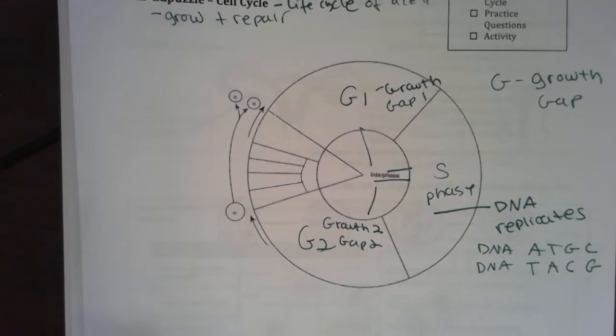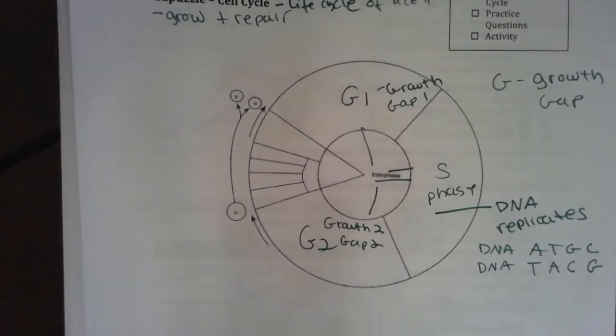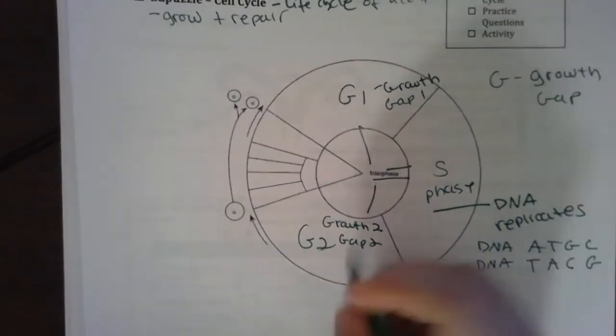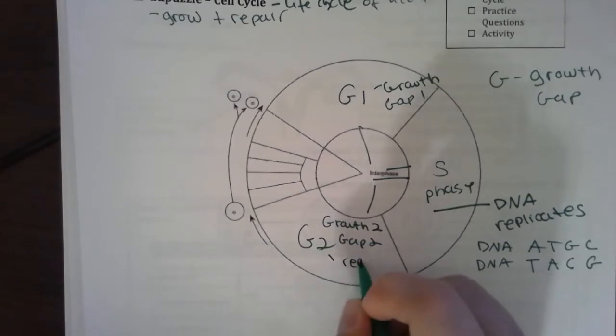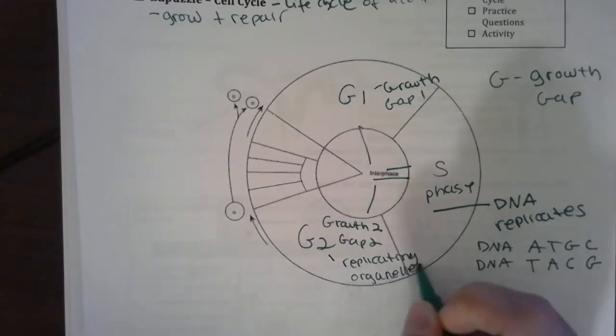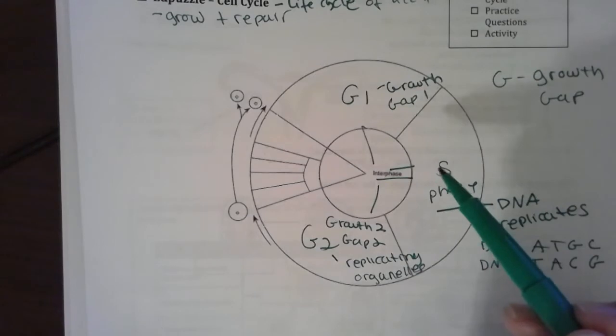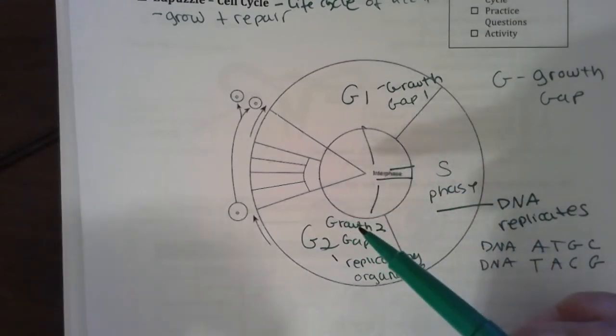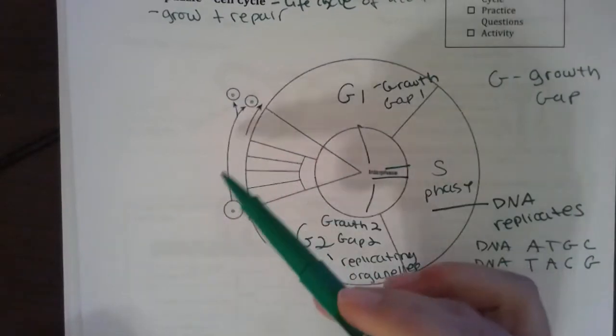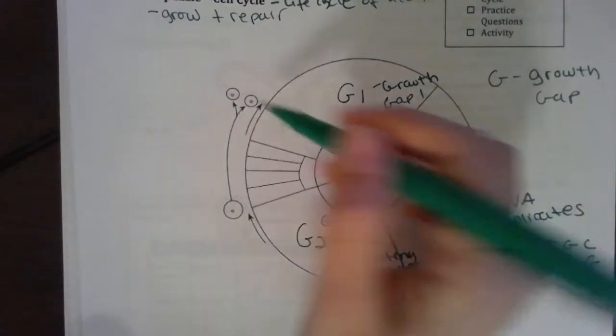In G2, this is when I'm replicating - it's growing, it's replicating organelles. So interphase: I'm going about my business, then I'm starting to replicate DNA, and then I'm starting to replicate all of my organelles. Why? Because I'm making two copies of everything.